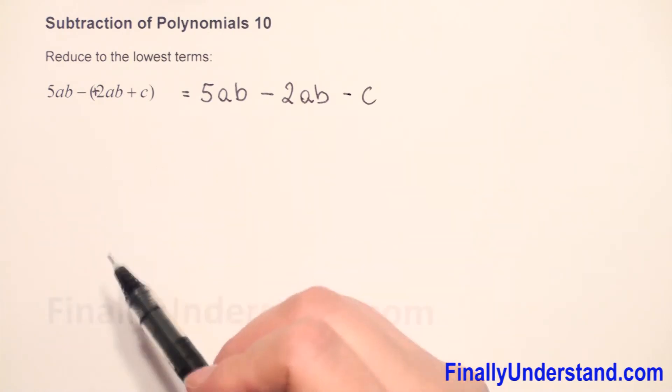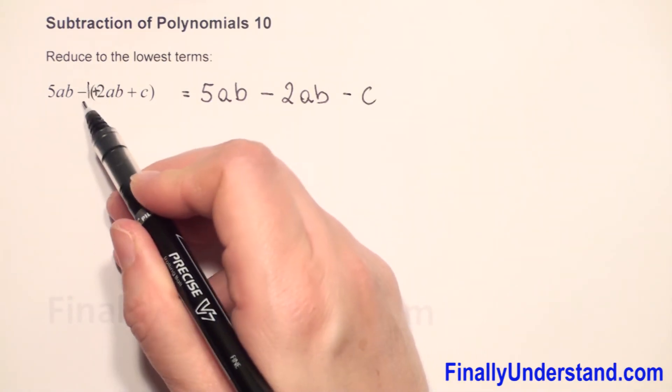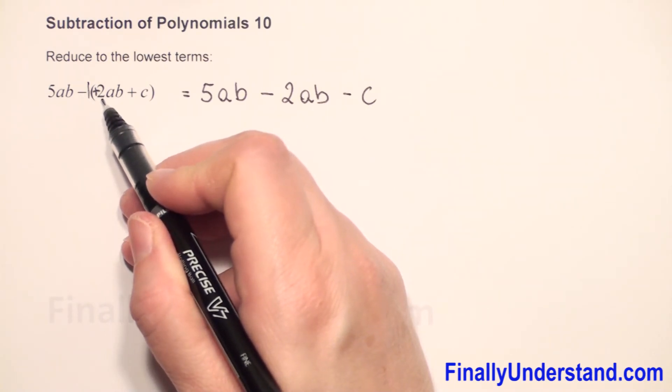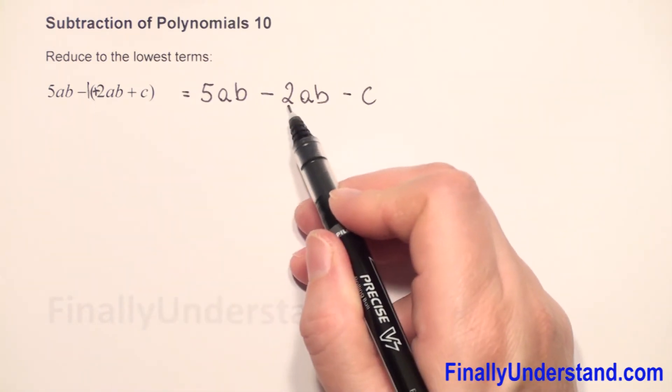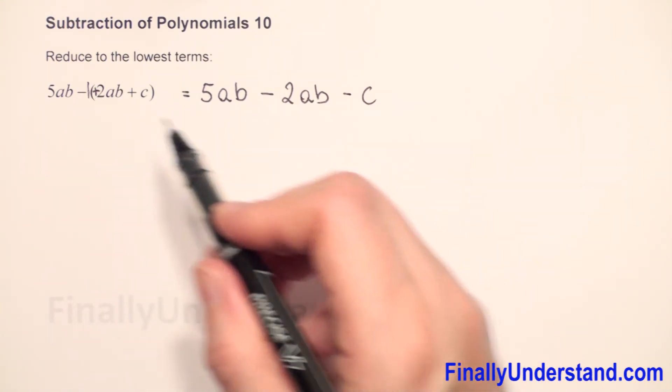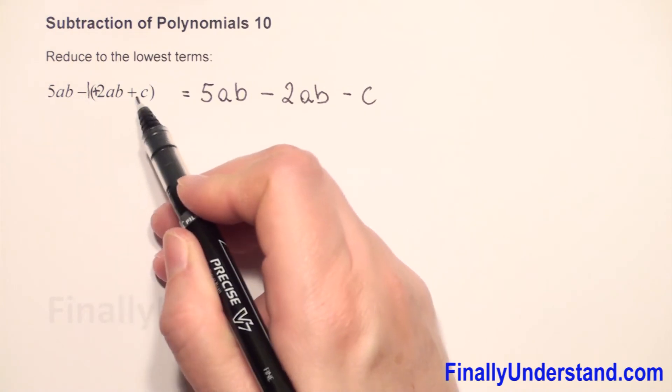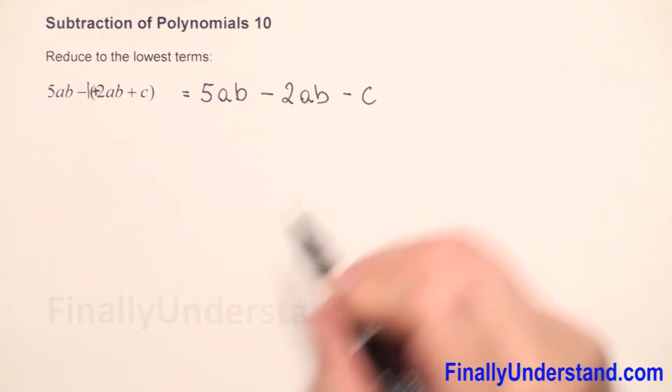One more time in other words, here is like an invisible one, so we have negative one times positive two is negative two. Negative times positive gives me negative. Negative one times here is like invisible one, positive one, so negative times positive again is negative. And now we have to combine the like terms.